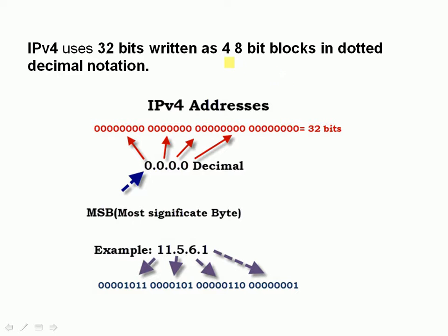IPv4 uses 32 bits for the address and it's written in four 8-bit blocks in dotted decimal notation. Here I've written an IPv4 address in binary form — 32 bits — and in dotted decimal notation here: 0.0.0.0, which is the dotted decimal representation of that binary IP address. The most significant byte is important when we look at address classes. Here's an example IP address: 11.5.6.1, and here is the binary equivalent below it.